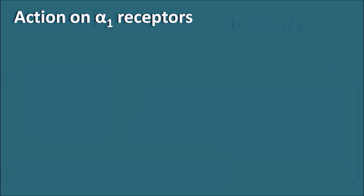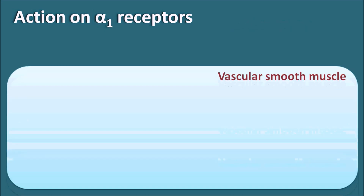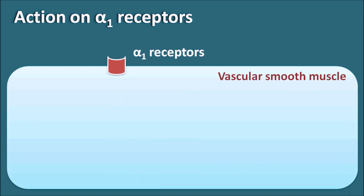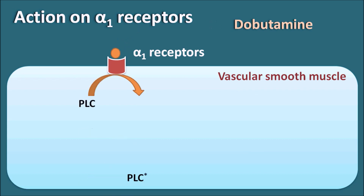Now let us see its action on the alpha-1 receptors. Alpha-1 receptors are mainly present on the vascular smooth muscle as well as other smooth muscles. When Dobutamine acts on alpha-1 receptors, it stimulates another enzyme system — Phospholipase C. When Phospholipase C is activated, it cleaves phosphatidylinositol bisphosphate into two molecules: one is DAG (diacylglycerol) and the second is IP3 (inositol triphosphate).